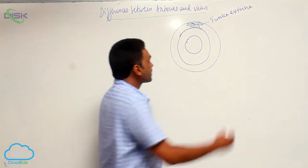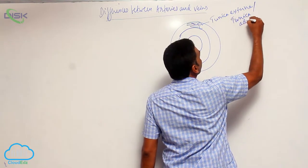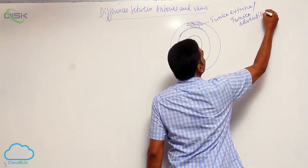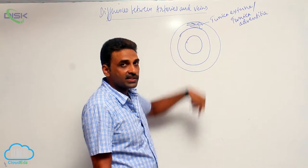Tunica externa, also called tunica adventitia, is a fibrous tissue mostly made up of collagenous fibers.